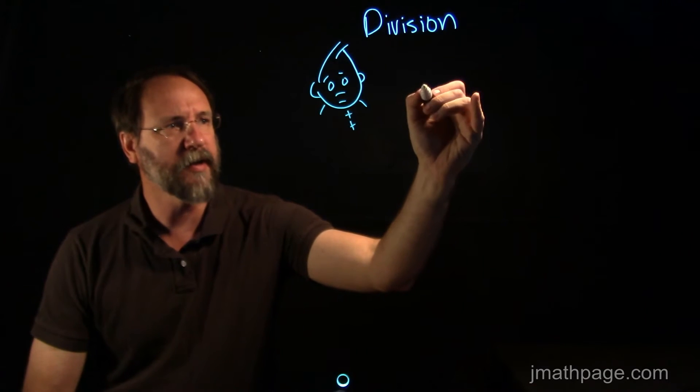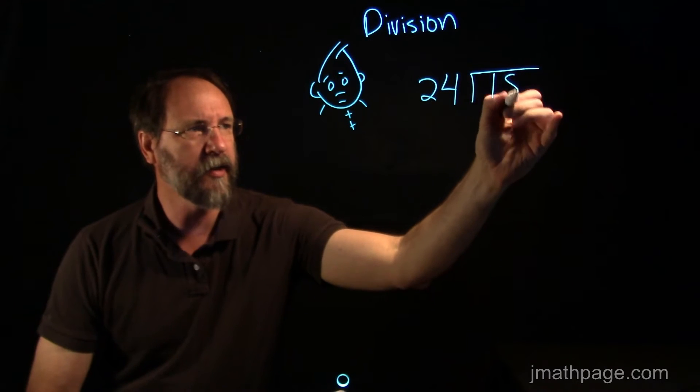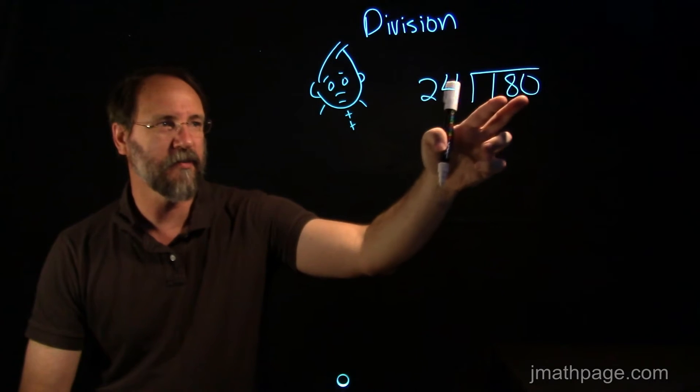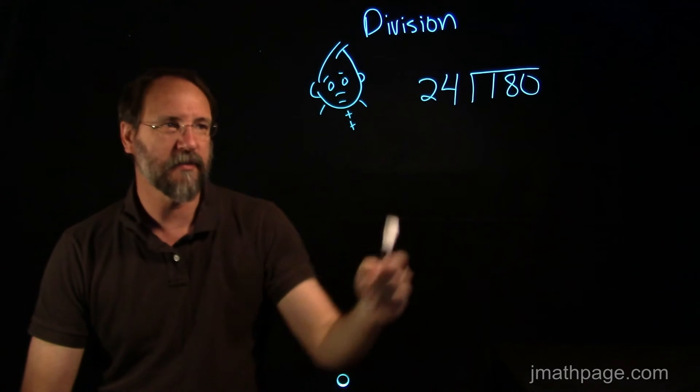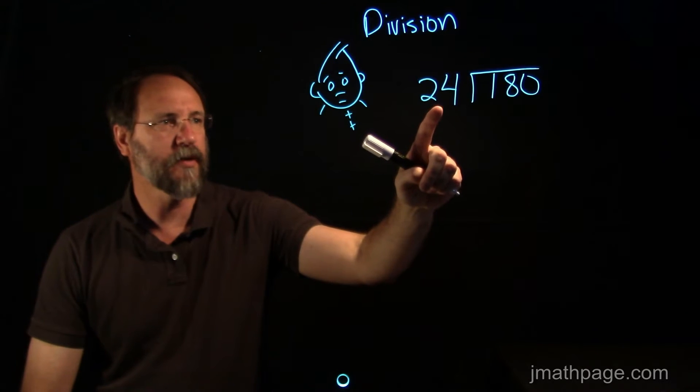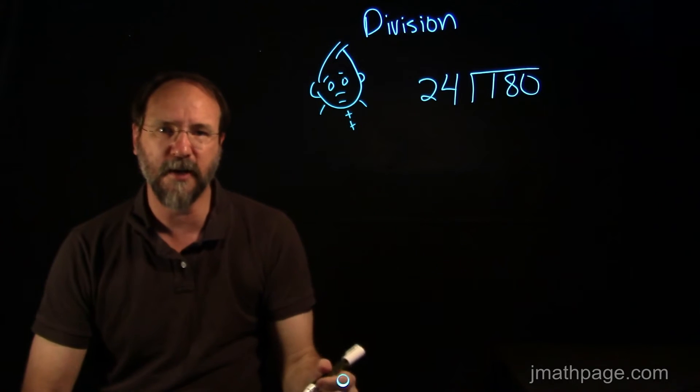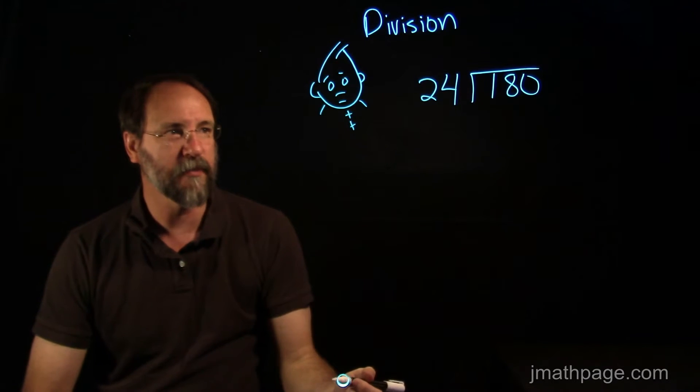So let's take a problem like 24 into 180. Now it looks difficult from the start because you have two digits here. You have a number over here and how many 24s can there be in 180? Well, you might start thinking that 24 goes into 100 a number of times and maybe some 80 number of times. You could get a good round number. But maybe there's a way of thinking about this that can simplify it a bit.